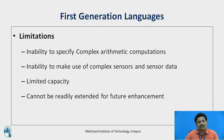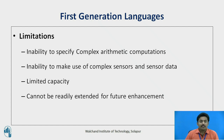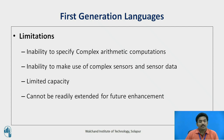Common limitations of first generation languages include inability to specify complex arithmetic computations for use during program execution, inability to make use of complex sensors and sensor data, a limited capacity to communicate with other computers, and the inability to be readily extended for future enhancement.